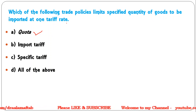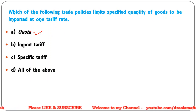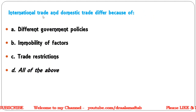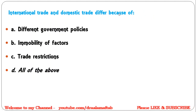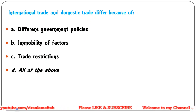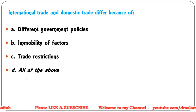Next question: International trade and domestic trade differ because of — different government policies; immobility of factors; trade restrictions; all of the above. Correct answer is all of the above — because of all these factors, domestic trade and international trade differ.